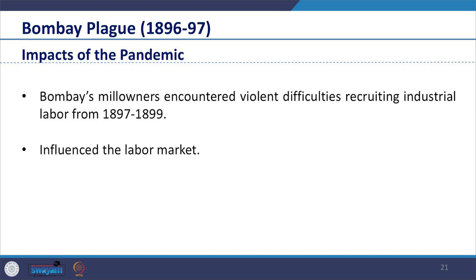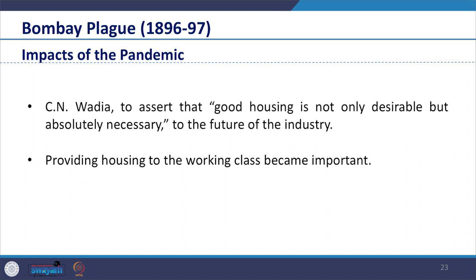Bombay's mill owners encountered violent difficulties recruiting industrial workers from 1897 to 1899 as many workers had fled the city. This also influenced the labour market. For the next two decades, Bombay's mill owners regularly discussed the conditions of mill workers' housing, which led some mill owners such as C.N. Wadiya to assert that good housing is not only desirable but absolutely necessary to the future of the industry. We see here how providing housing to the working class became important.